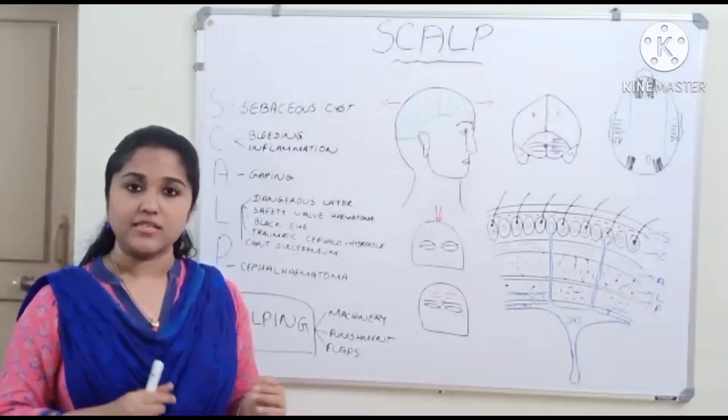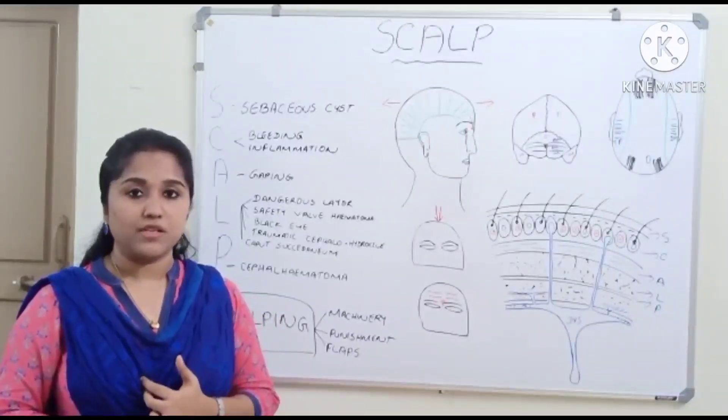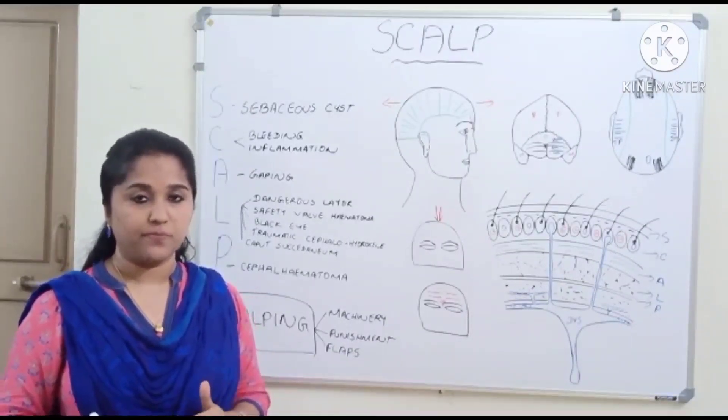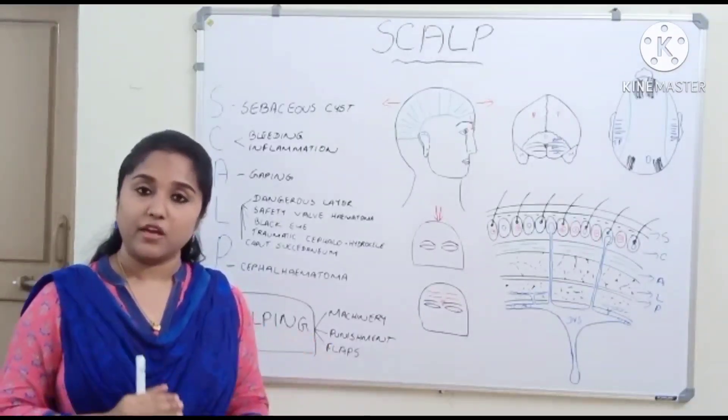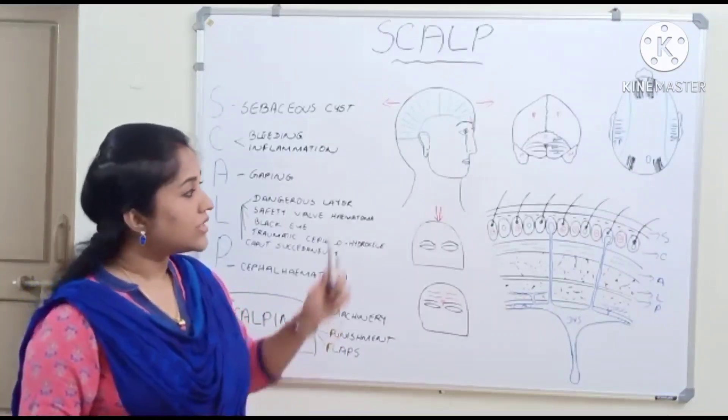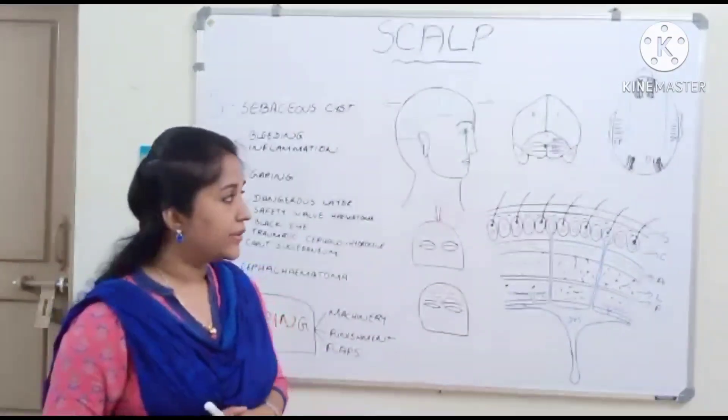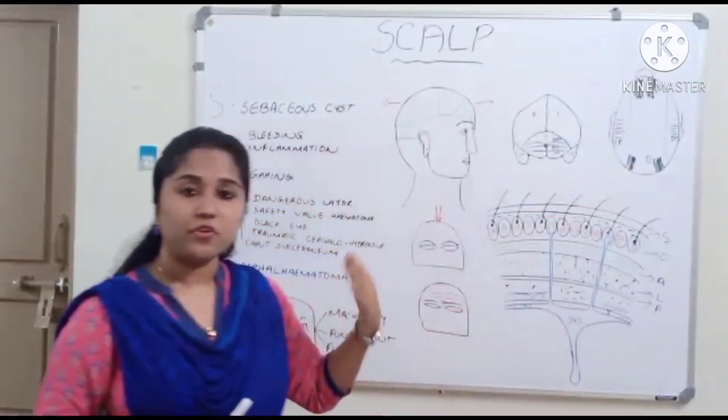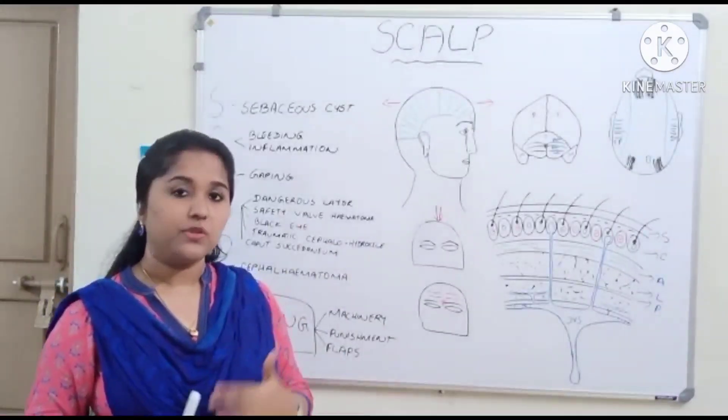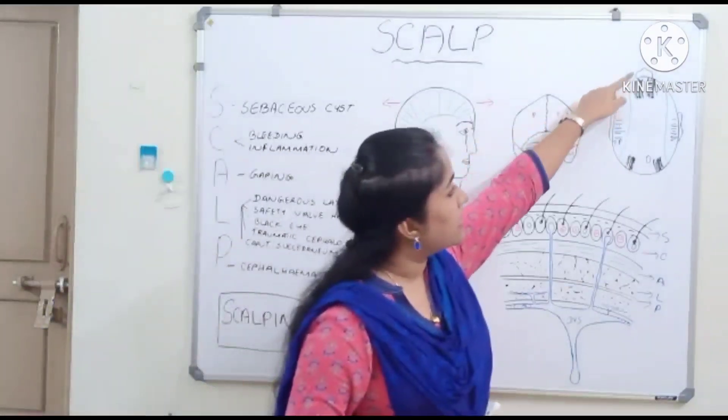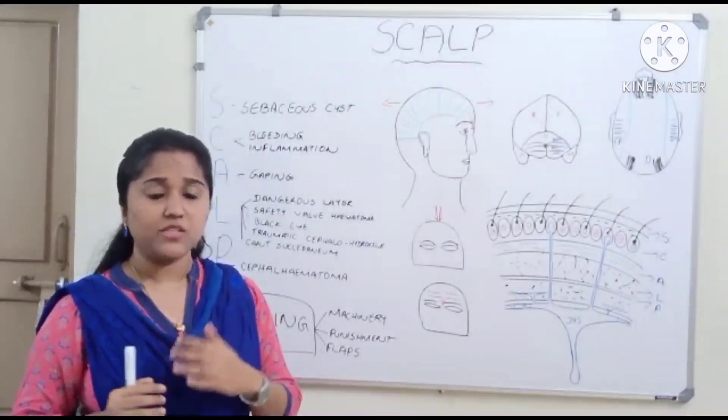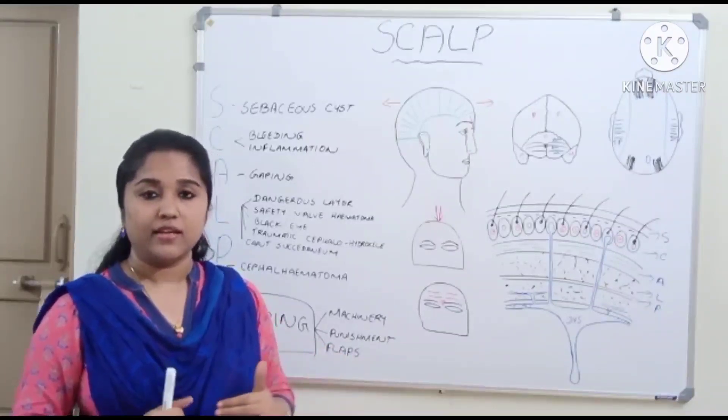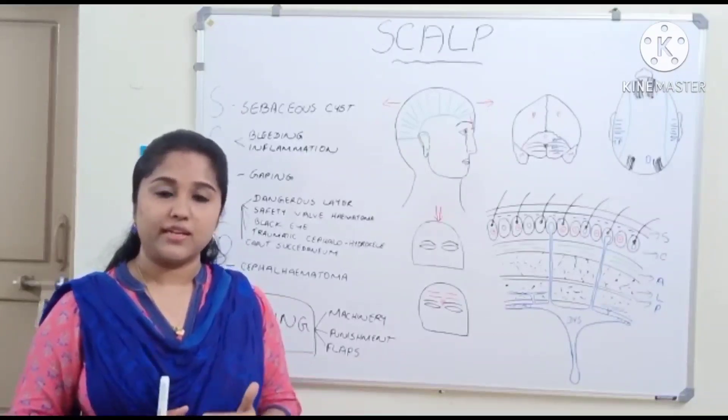The third layer is aponeurosis and epicranial muscle. Epicranial muscle includes occipitofrontalis, which is the main muscle, and temporoparietalis, a variable slip. Occipitofrontalis consists of a pair of occipital bellies and a pair of frontal bellies. The occipital bellies originate from the lateral third of the superior nuchal line of the occipital bone and the mastoid bone. The frontal bellies have no bony attachment and are attached to the subcutaneous tissue of the root of nose and eyebrow. These two bellies are connected by the galea aponeurotica or epicranial aponeurosis.